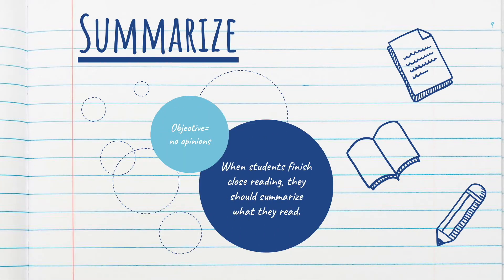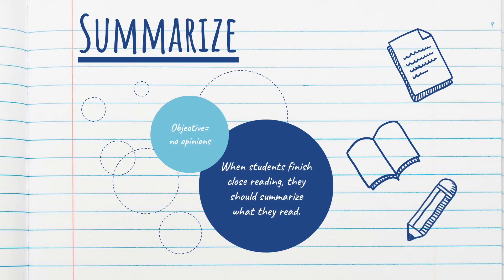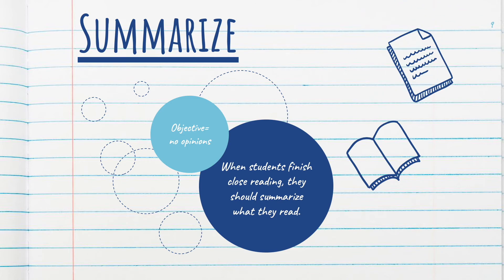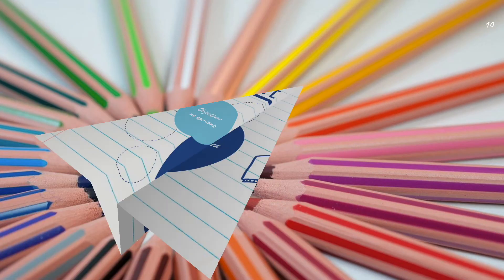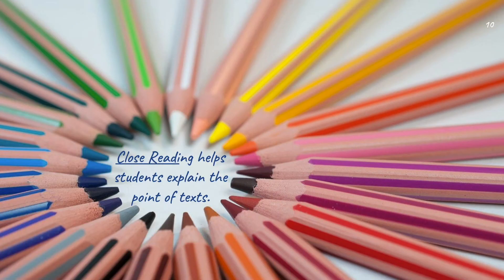Be objective without any opinions. When students finish close reading, they should summarize what they read. Close reading helps students explain the point of texts.